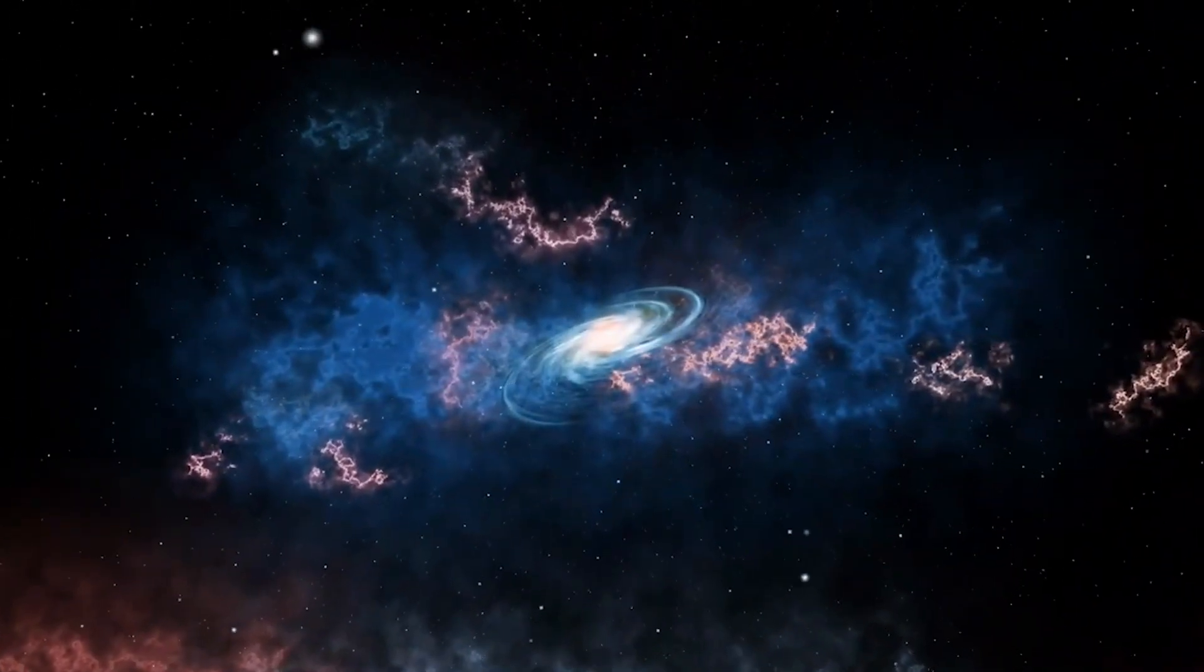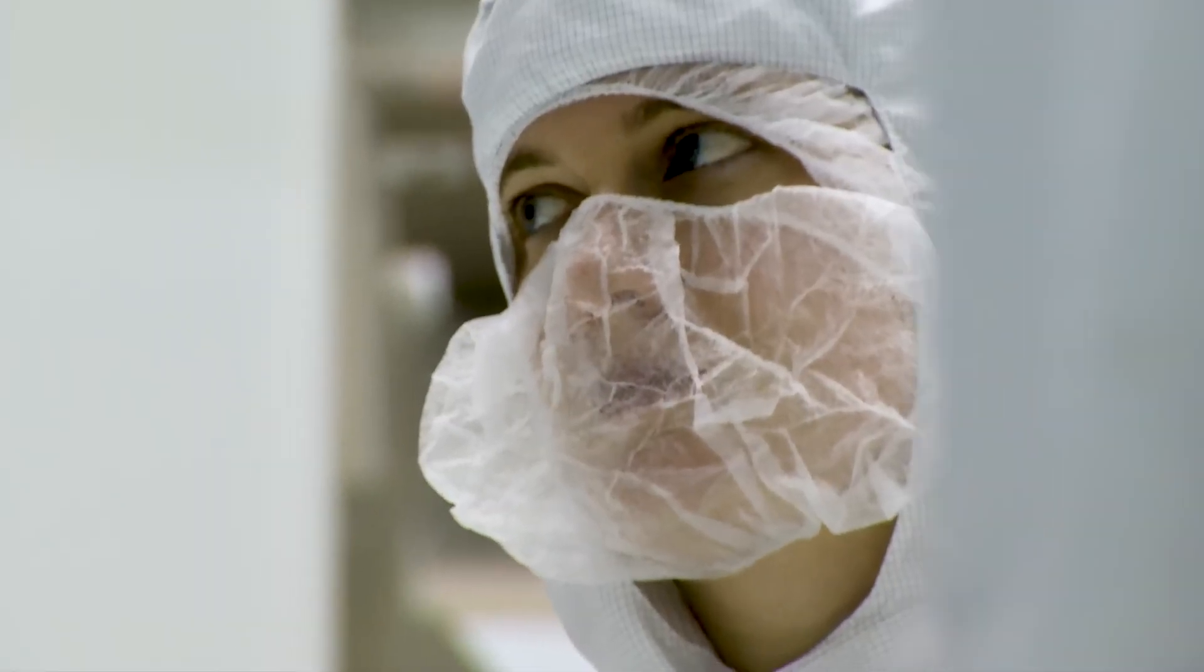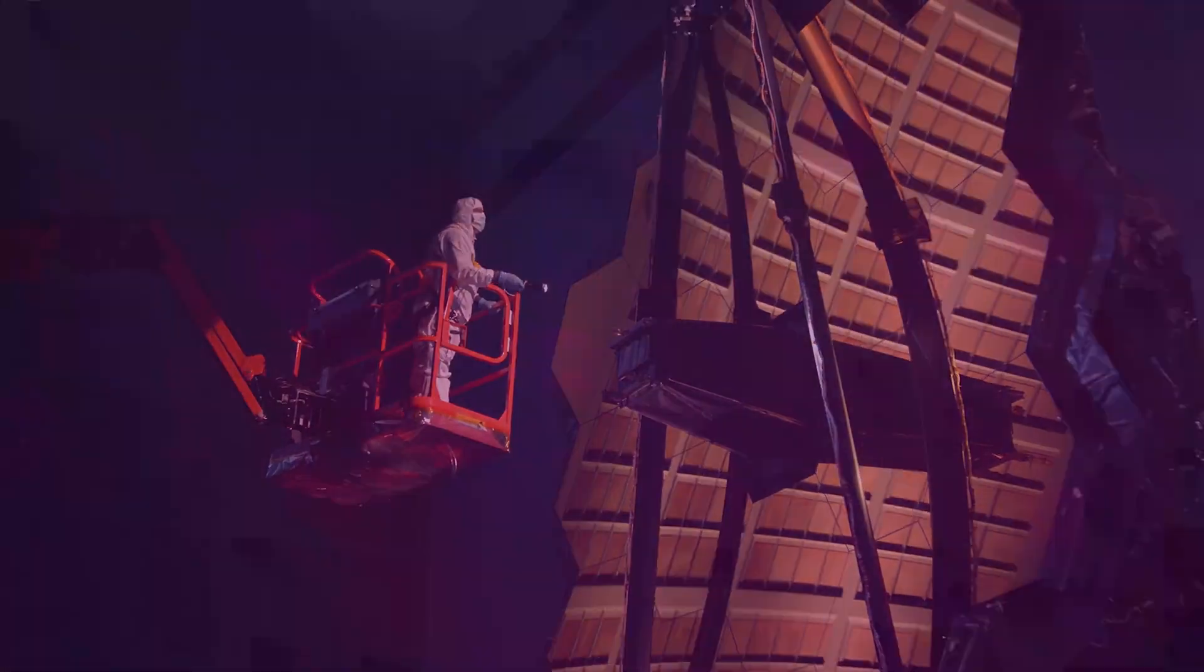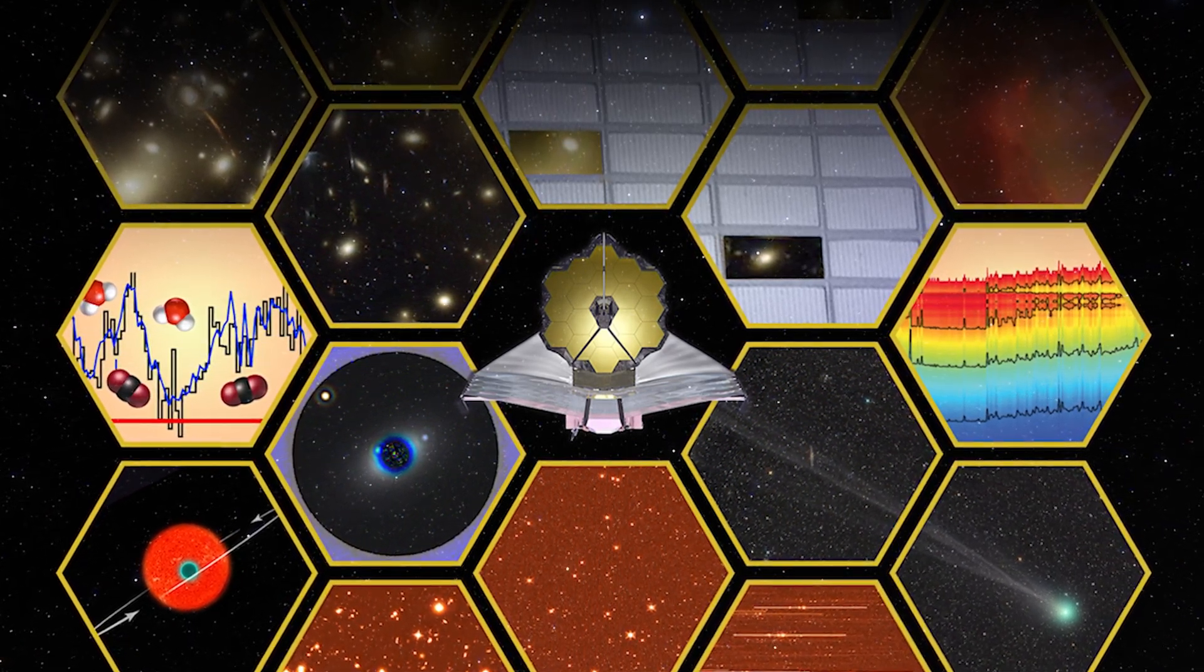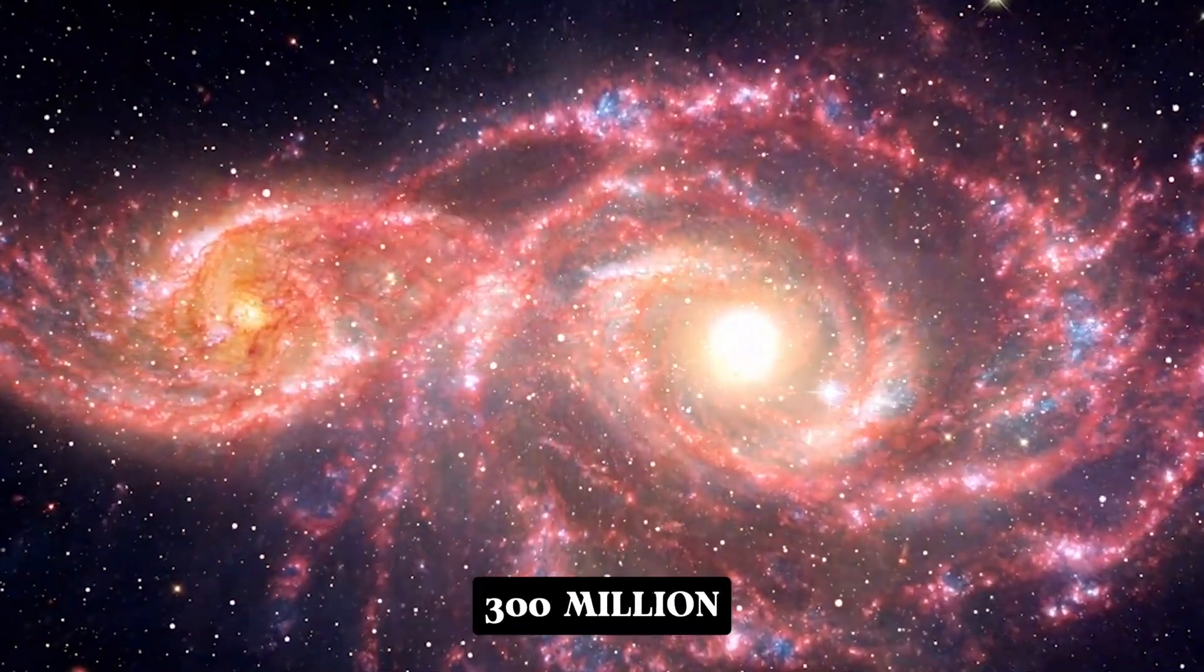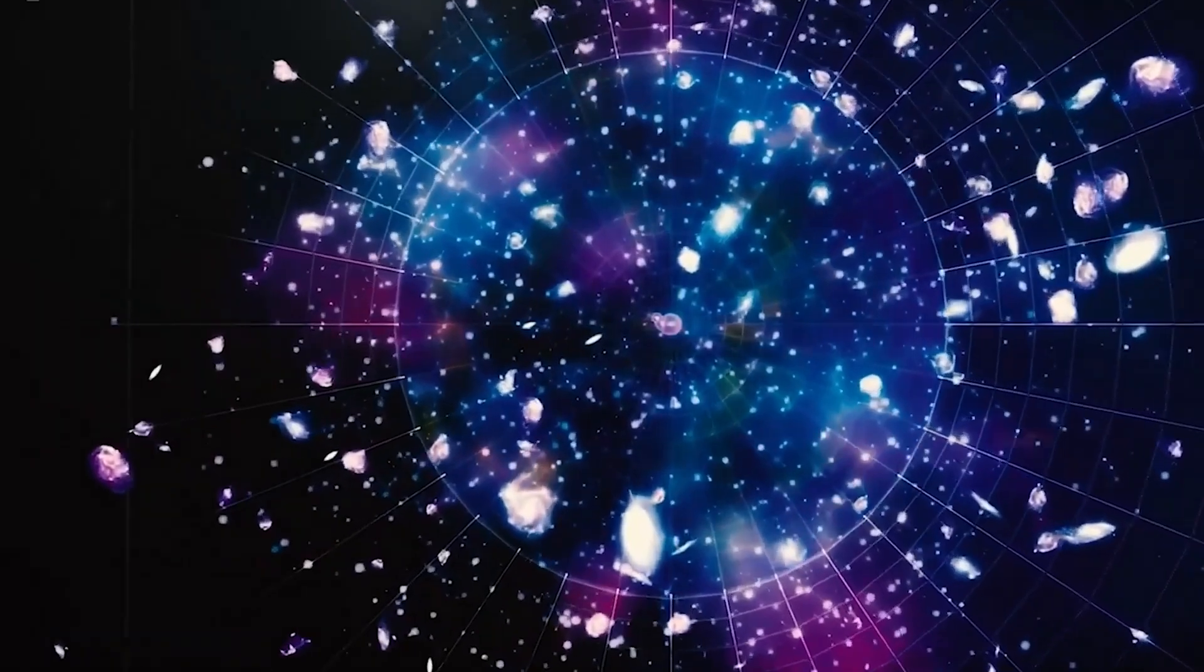The story begins with light. Every photon Webb captures has been traveling for billions of years. The farther it travels, the older the moment we see. Webb's infrared eyes were built to pierce cosmic dust and reach back to the first 300 million years after the Big Bang, the supposed dawn of structure and light.